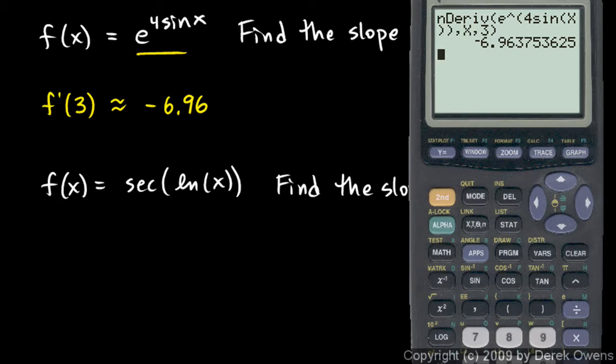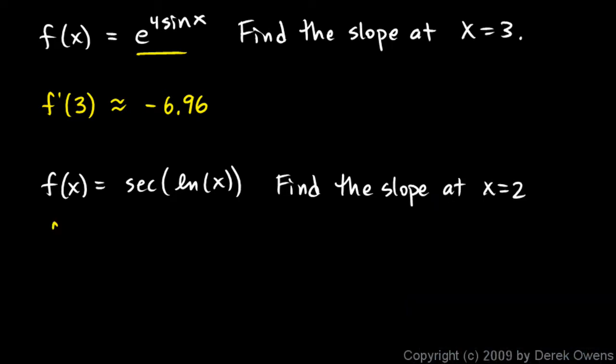Okay, let's pull the calculator back up and type in this function. So we do math 8, nDeriv, and secant, remember, secant is 1 over cosine. There's not a secant key, but we can do 1 divided by cosine of the natural log of x. Then we need a closed parenthesis for the natural log function. A closed parenthesis for the secant function, or the cosine in this case rather. And then comma x comma 2. And then closed parenthesis on our nDeriv. And we hit enter and it calculates it. I'll say about 0.54. So we can say f prime of 2 is approximately equal to 0.54.